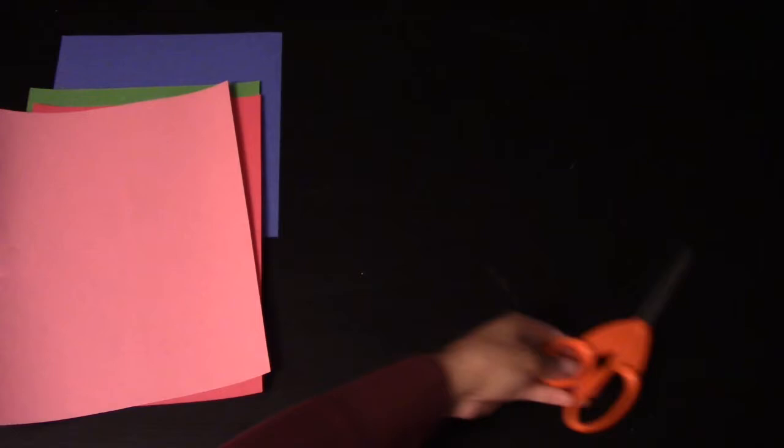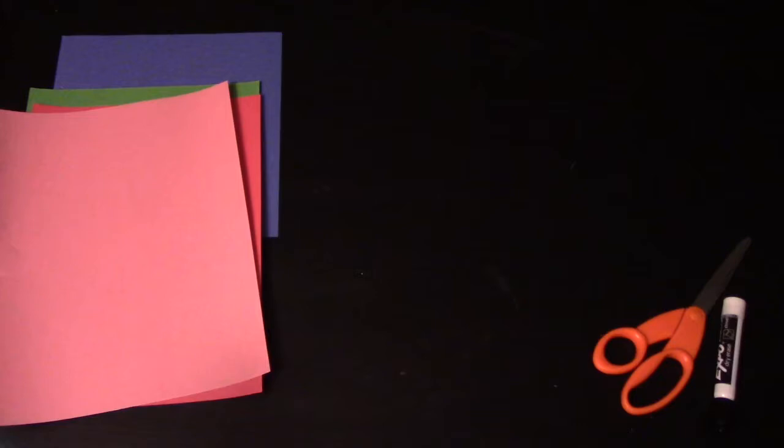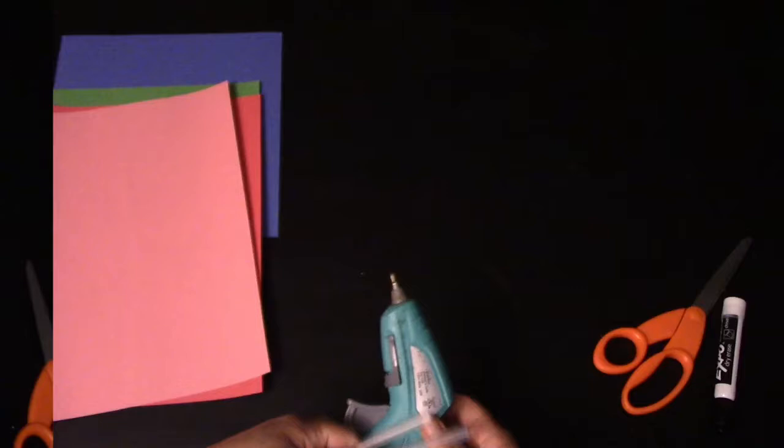You're going to need scissors that you will use with a parent, and you're also going to need a black marker. You will also need glue. It's best to work with hot glue for this project, and you should probably have some hot glue sticks on the side.